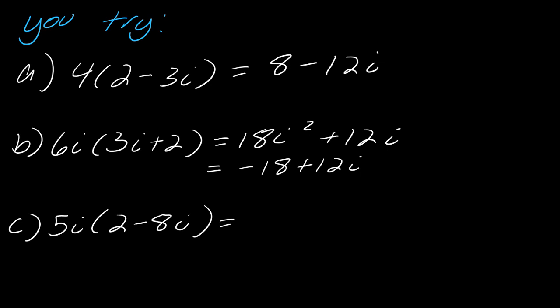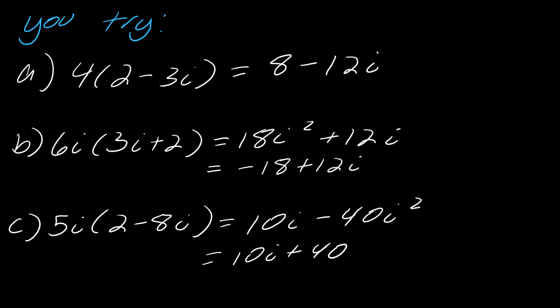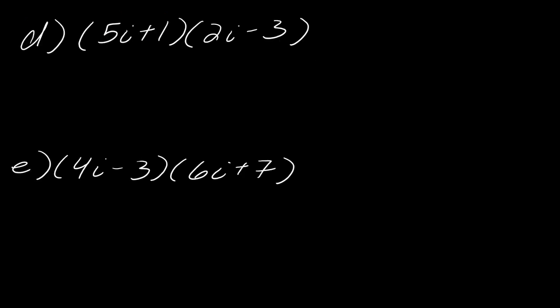For this other one, this becomes 10i minus 40i squared, so this becomes 10i plus 40 — again, just flip the sign. Now let's make this a little bit harder. For these, you're going to have to FOIL. You can go ahead and pause and hit play when you're ready, otherwise I'll go through an example with you.